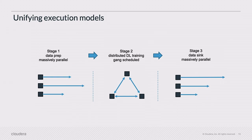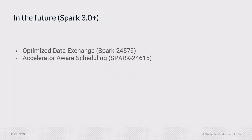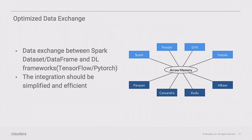That's pretty much it for this session on distributed deep learning training — the gang scheduler is really the big piece. Let me mention a few more things coming with Spark 3. One is optimized data exchange and another is accelerator-aware scheduling. With optimized data exchange, it's Apache Arrow. If you haven't seen this before, it allows more efficient information exchange between Spark DataFrames and pandas DataFrames across different frameworks and engines. With Apache Arrow, you don't need to do the expensive serialization and deserialization, and you can integrate much more quickly. This will definitely speed up a lot of the workloads you're doing.